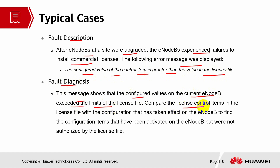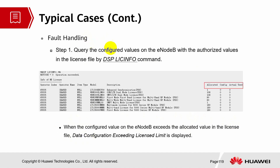They compared the license control items in the license file with the configuration that had taken effect on the EOB, to find the configuration items that had been activated on the EOB but were not authorized by the license file. When the configured value on the EOB exceeds the allocated value, a message stating 'data configuration exceeding license limit' will be displayed.